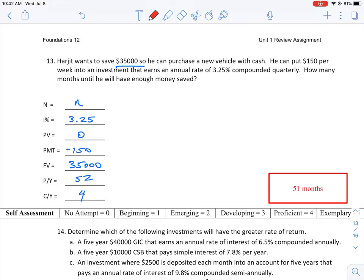We know the interest rate is 3.25%. When you use your calculator, you don't have to convert that to a decimal. You just type in 3.25%, and it'll internally do the calculation for you to divide by 100. The present value is zero because he doesn't have any money at this point and he's building up to saving that.